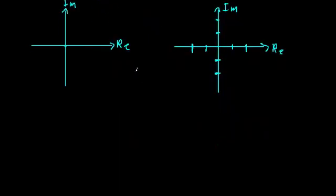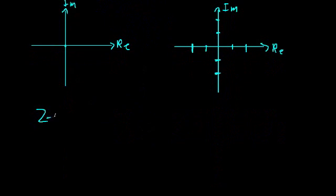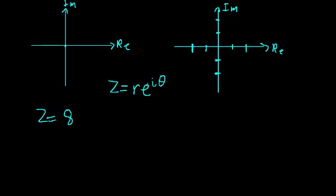Let's continue working with this example. Let's say that z is equal to 8, our complex number z. The first step we need to do to find the complex roots is to write our number in polar form, which is just of the form z is equal to r times e raised to the i times theta. What we need to do now is figure out what r and theta are. One way we can do this is to plot our complex number on the complex plane.